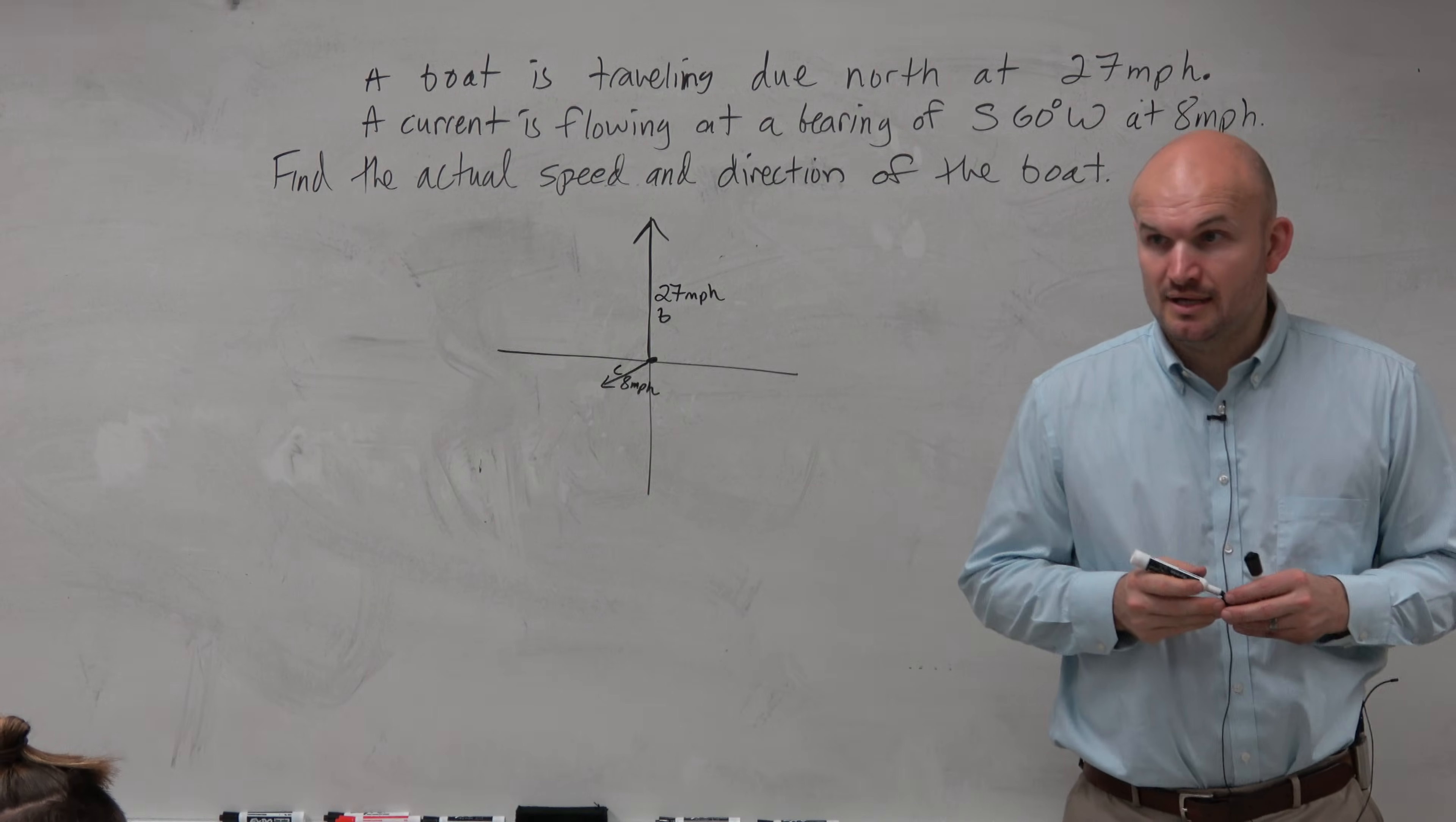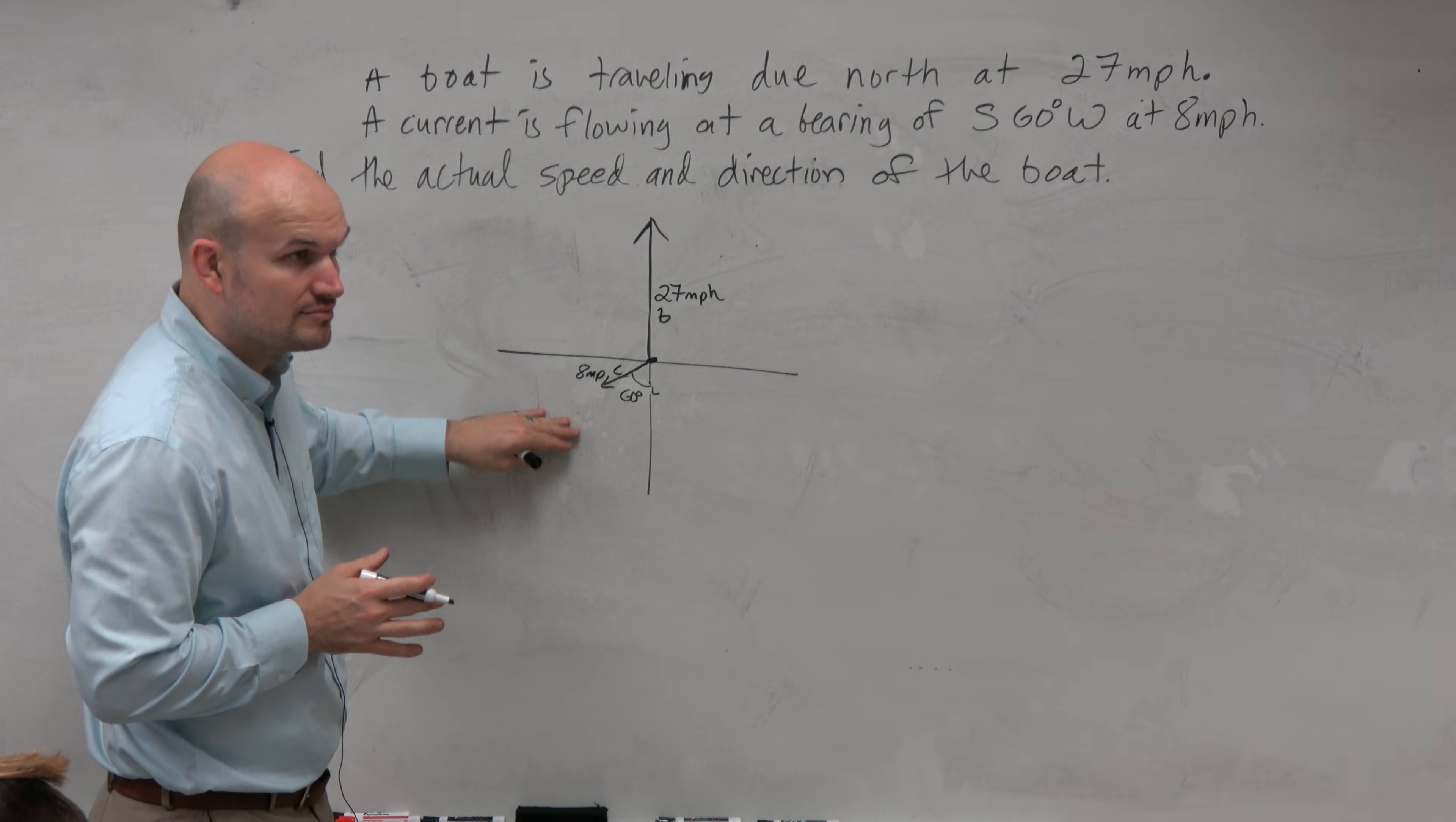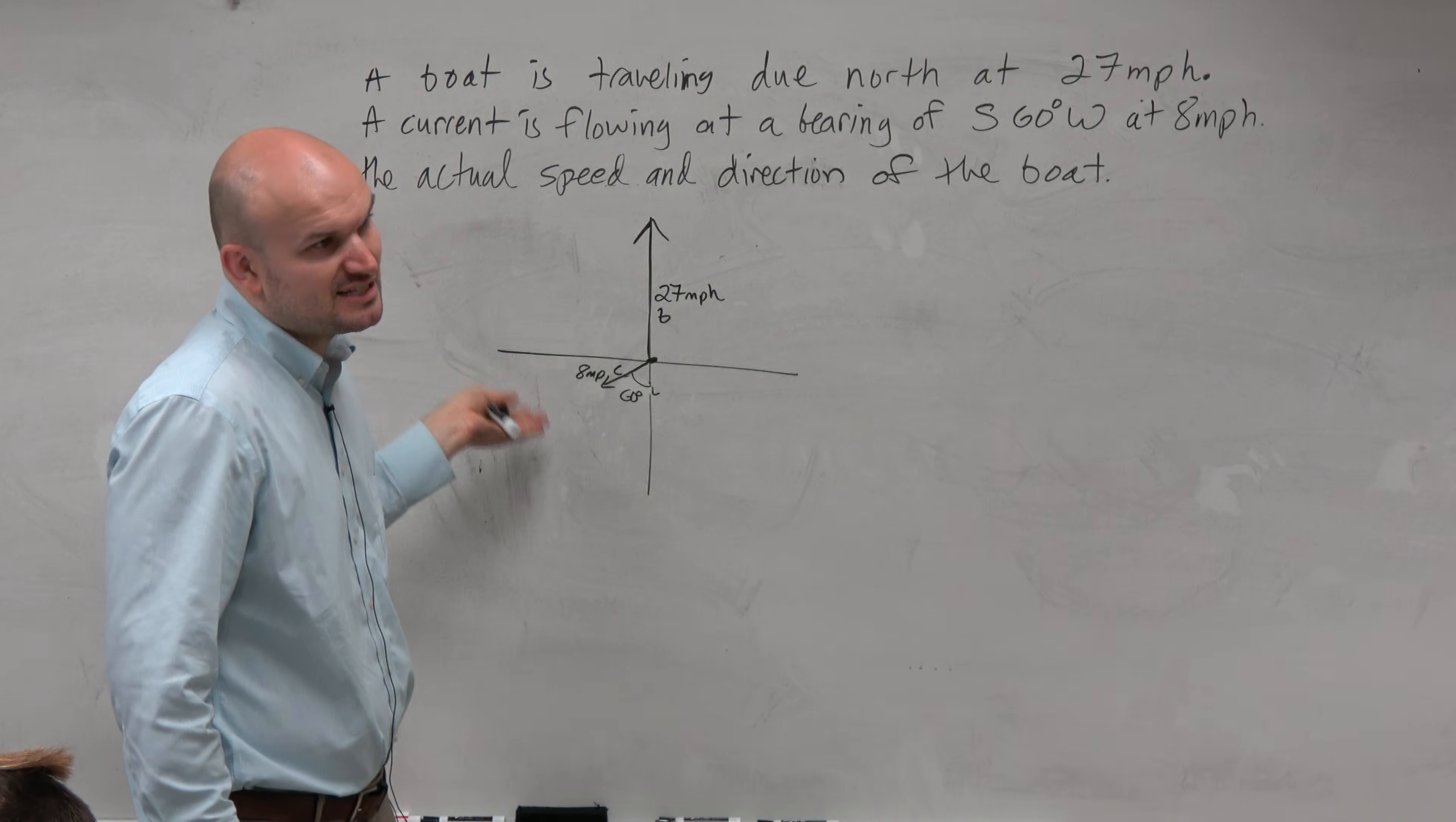So those are my two vectors. And again, what the question is asking us, so I told you to draw the two vectors, and hopefully you guys got something there. We know that that's 60 degrees right there, and that's 8 miles per hour. And good, hopefully we should have got to this point. Now, what is the actual speed and direction of the boat? So to actually understand the speed and direction of the boat, we've got to understand what these vectors are. How can I write this in terms of vectors? That's what we want to look into.